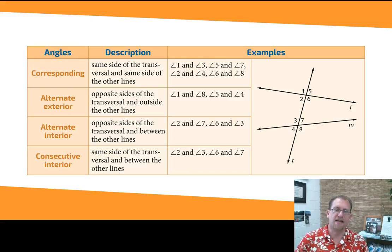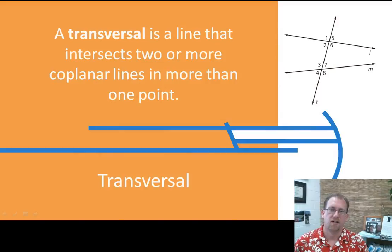And then consecutive interior are on the same side of the transversal and between the other lines. So angle two and three are consecutive interior angles. Angles seven and six are consecutive interior angles. If you need to see all those definitions again, I don't blame you. Go ahead, feel free to pause the video and go back.